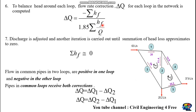Once we do the iteration, it will converge to zero. We stop the iteration when the summation of head loss due to friction is approximately equal to zero.